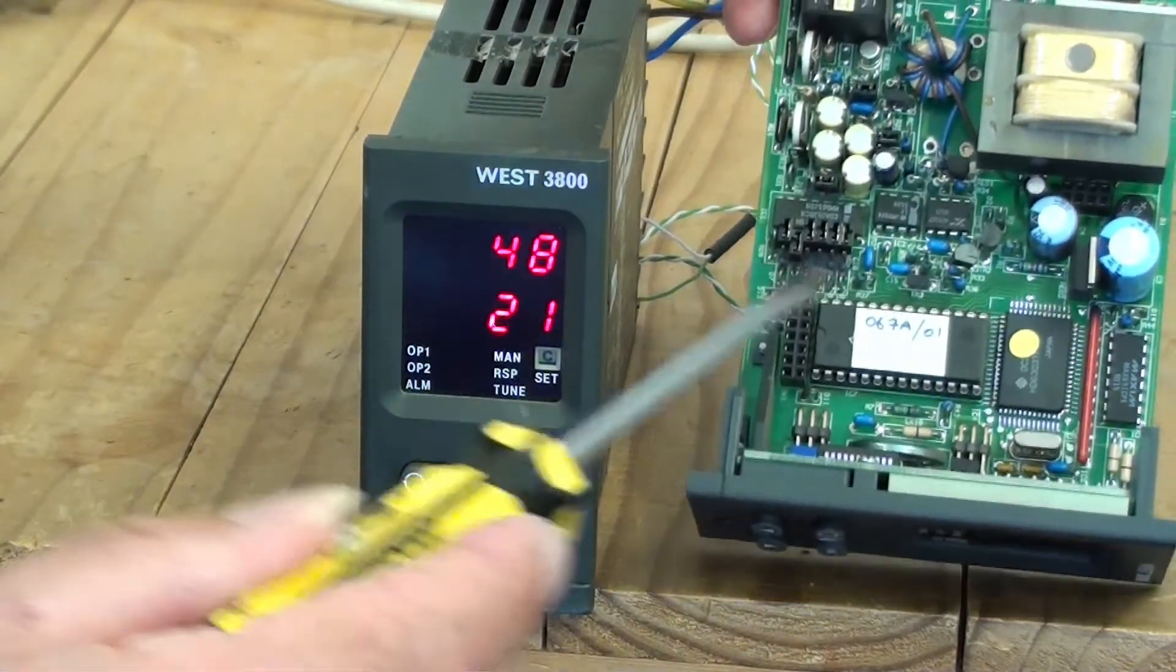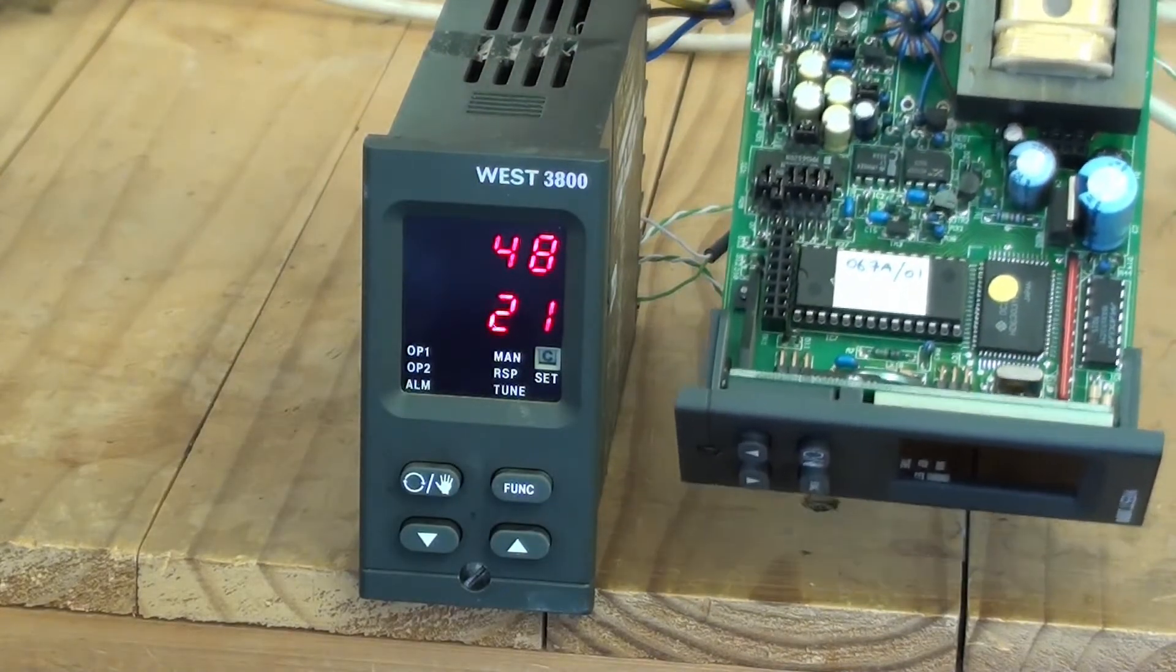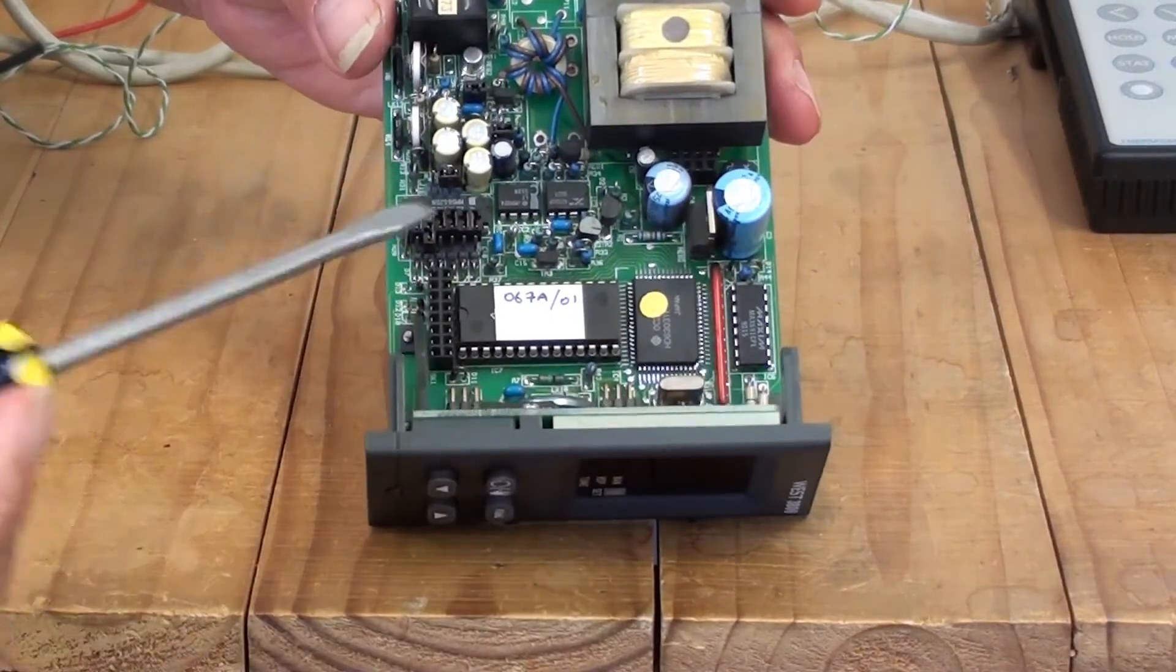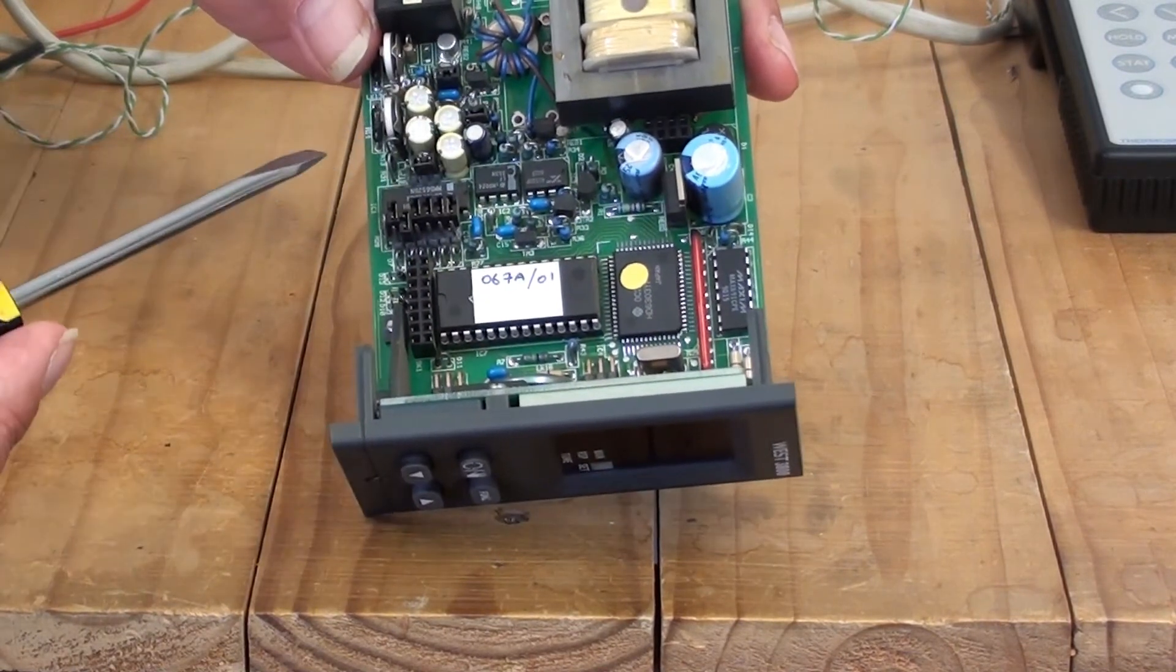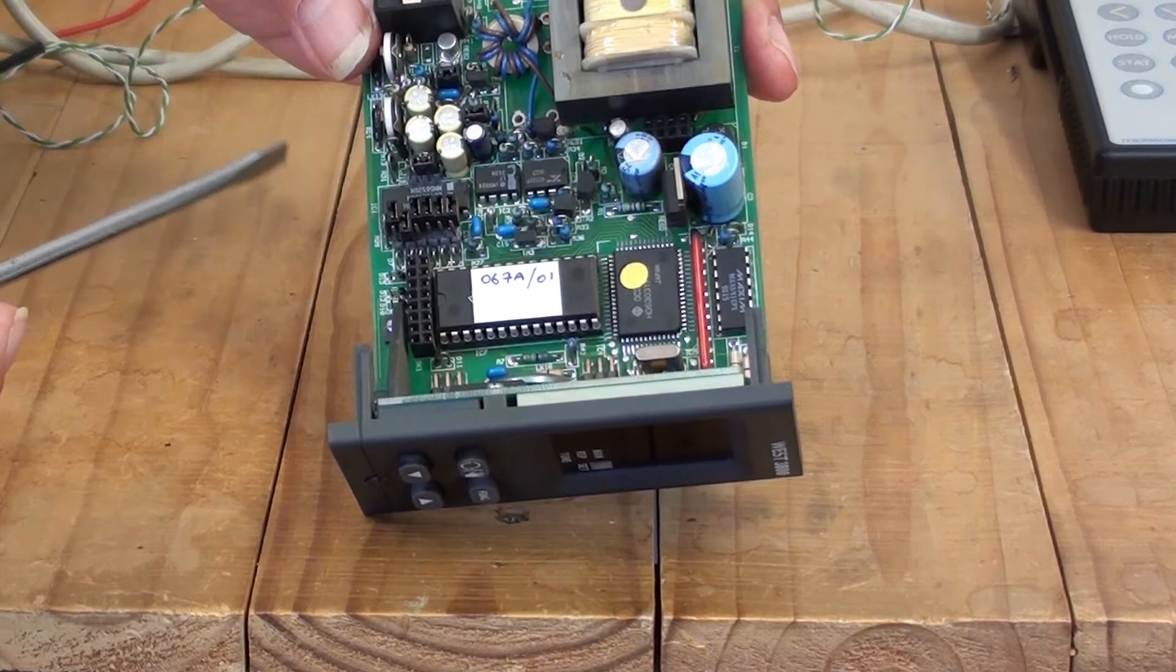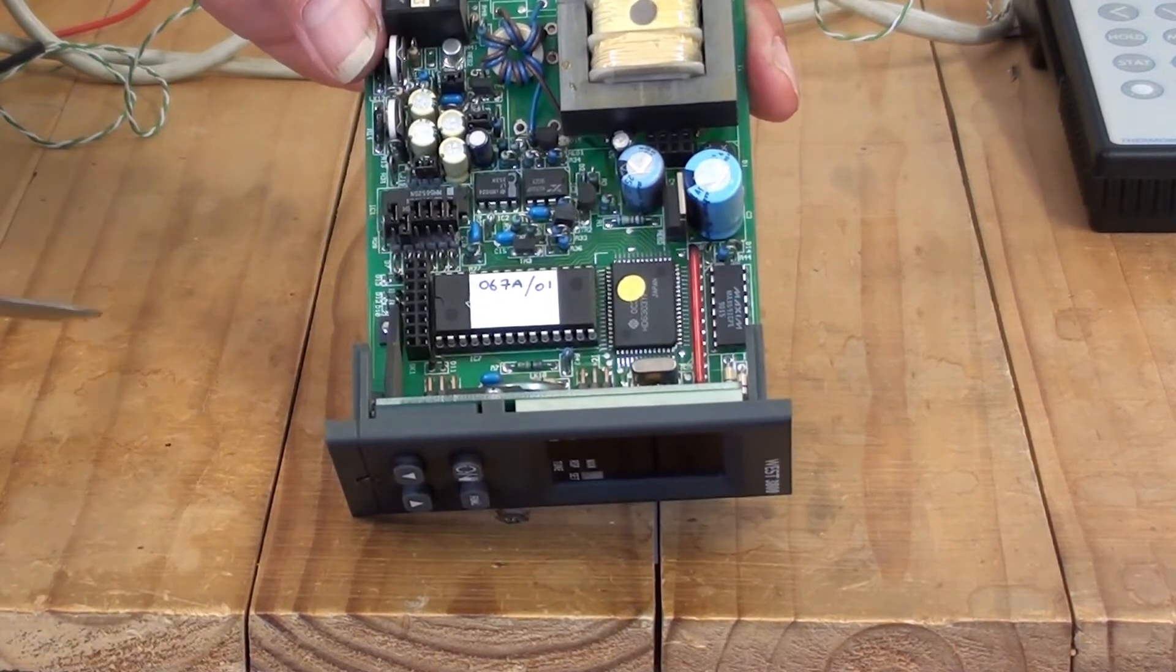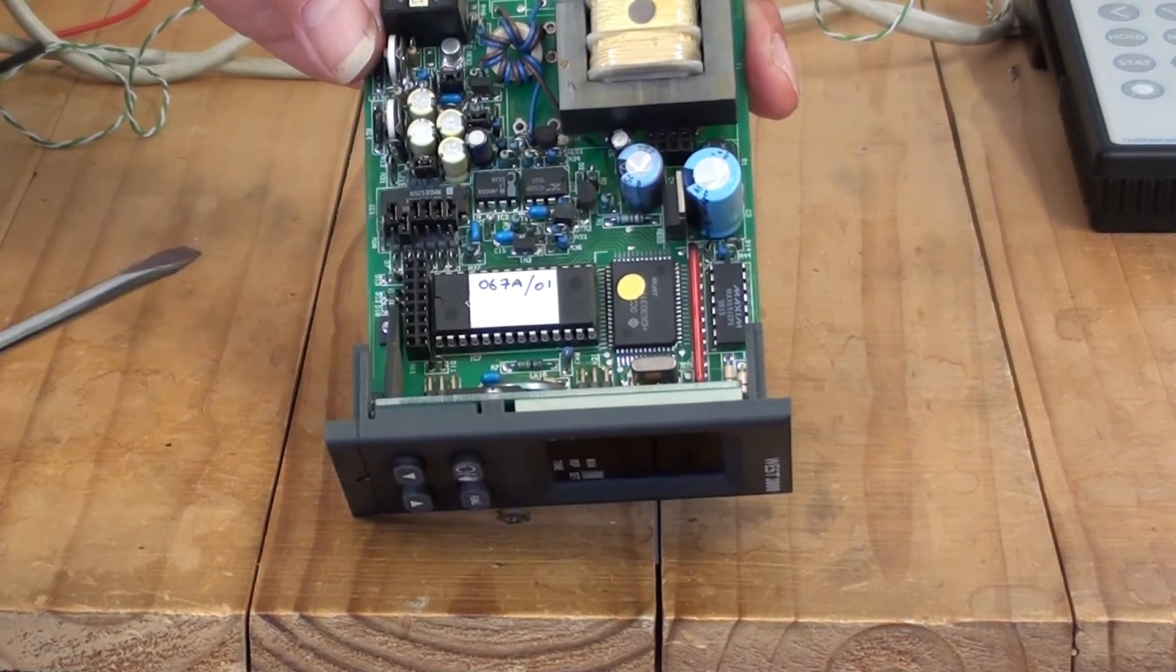Now we'll look at the link jumpers here which is how the controller would have been configured in the factory for the type of input signal. Here are the link jumpers here, here and here, and it's the selection of these link jumpers - whether the link is made or if they're parked - that would determine the configuration of the controller for different types of input, for thermocouple input and what type of thermocouple it would be and the range, or if it's RTD and so on. That was done by selection of these link jumpers.